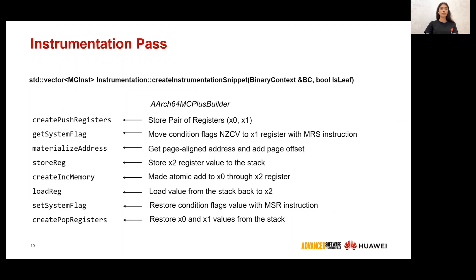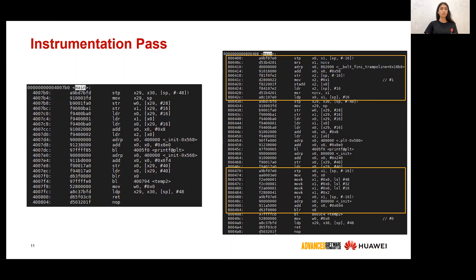Because ARM is a family of reduced instruction set computers, it takes more steps to reproduce the same actions as in x86. We do the same thing with saving registers to the stack, as we'll need them to update our counters. We save condition flags and retrieve the counter address and value to increment it. After this, we restore values from the stack to get back to the same state as before the counters were incremented. Here you can see the generated assembly in the final binary for the snippet at the beginning of a function and also for the indirect call.